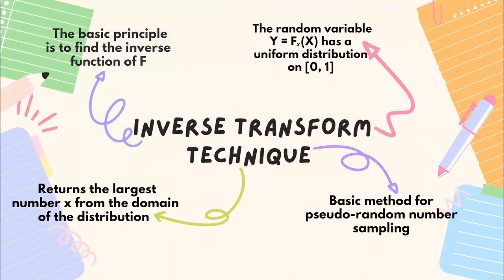Now we have to recall the inverse transform technique. Inverse transform sampling is a method for generating random numbers for any probability distribution by using its inverse cumulative distribution f-inverse of x. Recall that the cumulative distribution for a random variable x is F(x) equal to the probability of x being less than or equal to x. We assume that our computer can on demand generate independent realizations of a random variable u uniformly distributed on the interval 0 to 1.